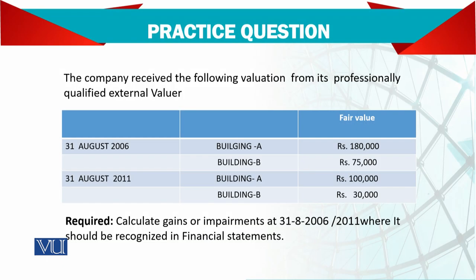The company received the following valuations from its professionally qualified external valuer: on 31st August 2006 — after five years — for Building A and Building B, and again on 31st August 2011 — after another five years — for Building A and Building B. Now calculate the gain or loss on impairment and where it should be recognized in the financial statements.